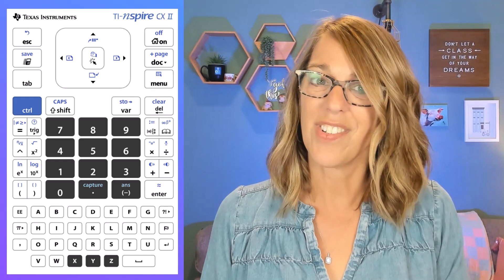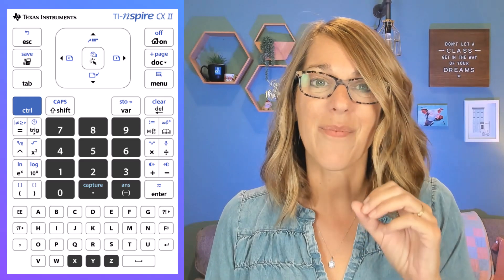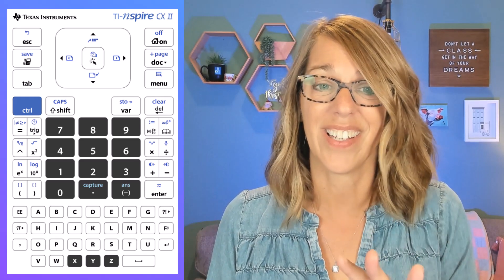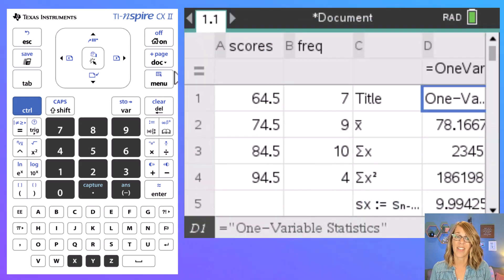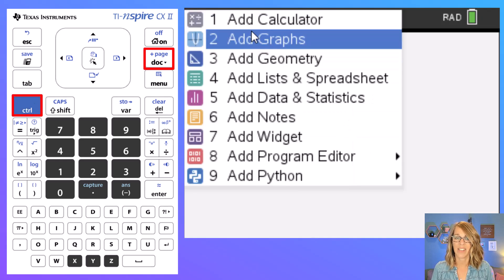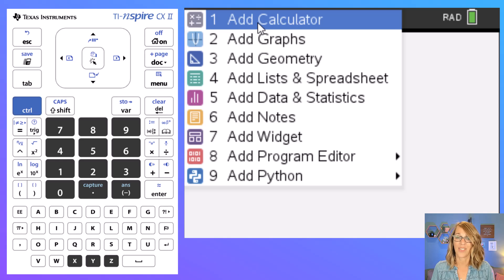To find my range though or something like an interquartile range I want to go to a calculator screen. So I'm going to add another page here clicking control and then that plus page button and we're going to add a calculator. So number one here.